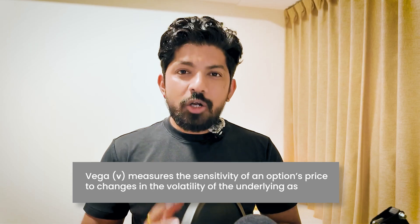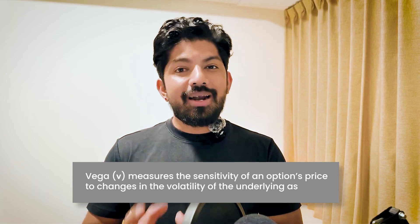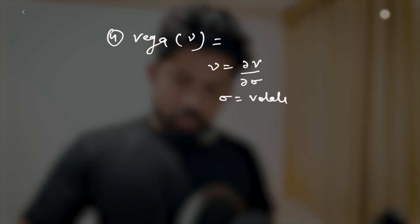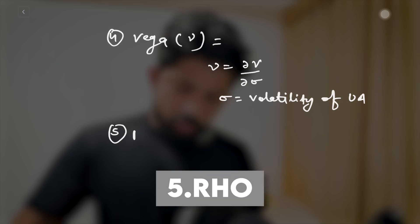The next Greek is vega. Vega measures the rate of change of the option's price with respect to the change in the volatility of the underlying asset. It represents the sensitivity of the option's price with respect to the volatility of the underlying asset. The formula is: vega = dV/dσ, where σ is the volatility of the underlying asset.